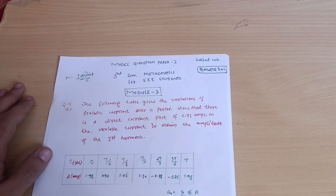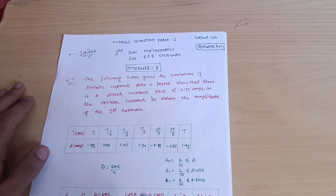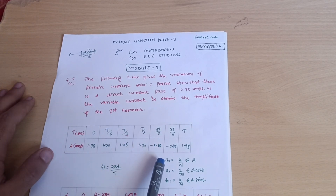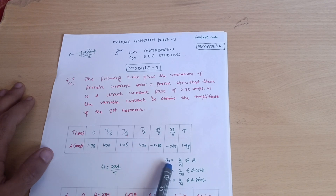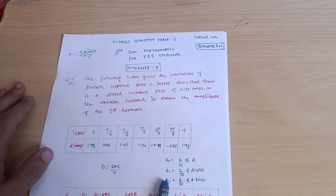This is your table where time and amplitudes are given respectively. You have to use three formulas to solve this question: a₀ is equal to (2/n)·Σa, a₁ is equal to (2/n)·Σ(a·cos θ), and b₁ is equal to (2/n)·Σ(a·sin θ). These are the three formulas you need to use.